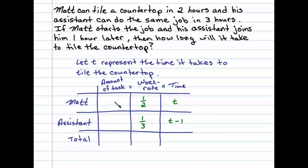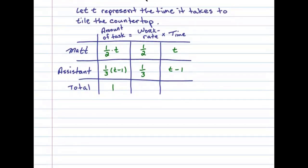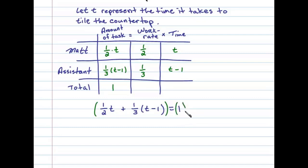We can determine the amount of task Matt completes by multiplying his work rate times the time: one-half times T. The amount of task his assistant completes will be one-third times (T minus one). The task is to complete one tiled countertop, so the setup is: the amount of task completed by Matt plus the amount completed by his assistant equals one complete task.